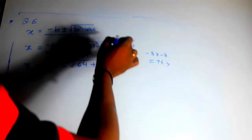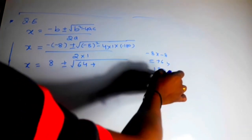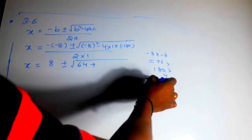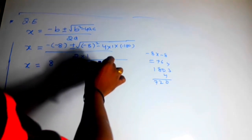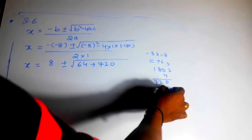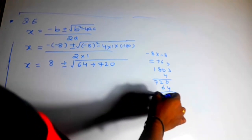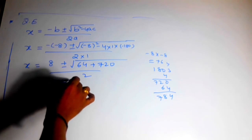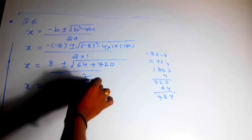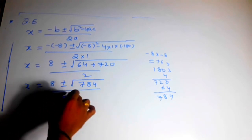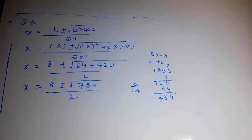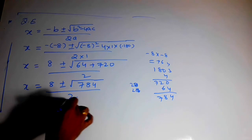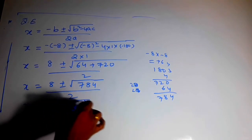So we have 4 into 180 equals 720, and 720 plus 64 equals 784. Therefore the expression becomes 8 plus or minus under root 784, divided by 2.